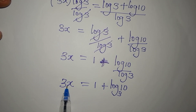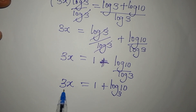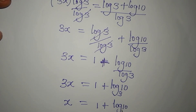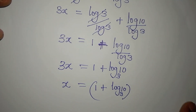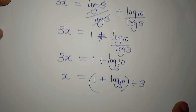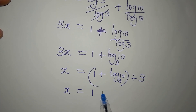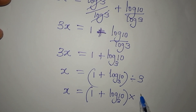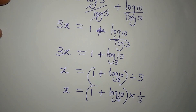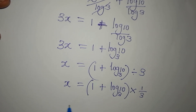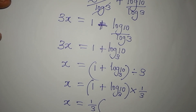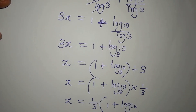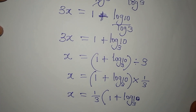Now to get x, I divide both sides by 3. So x equals 1 plus log base 3 of 10, all divided by 3. This is the same as x equals one-third multiplied by the quantity 1 plus log base 3 of 10.